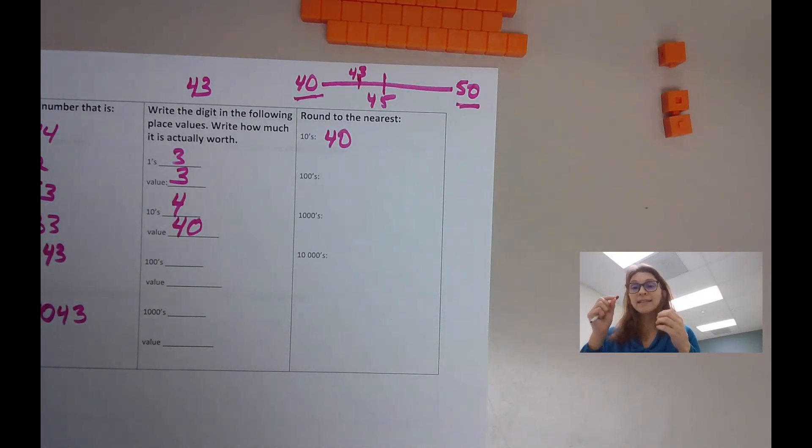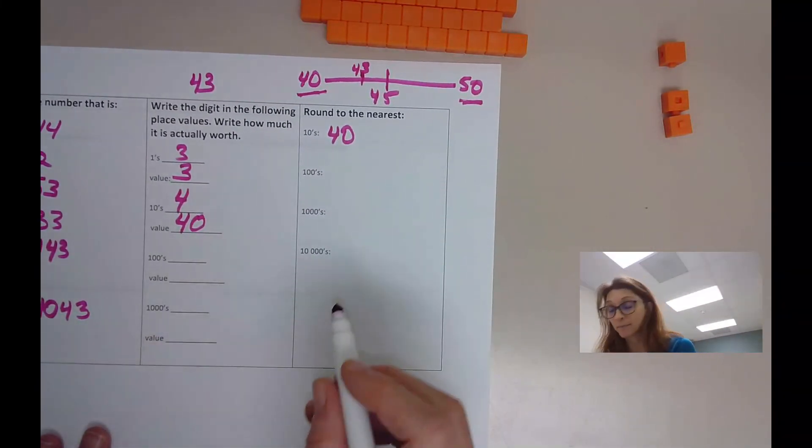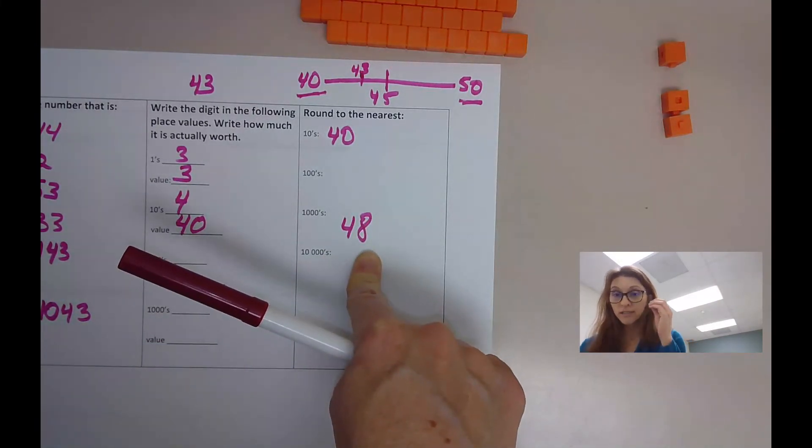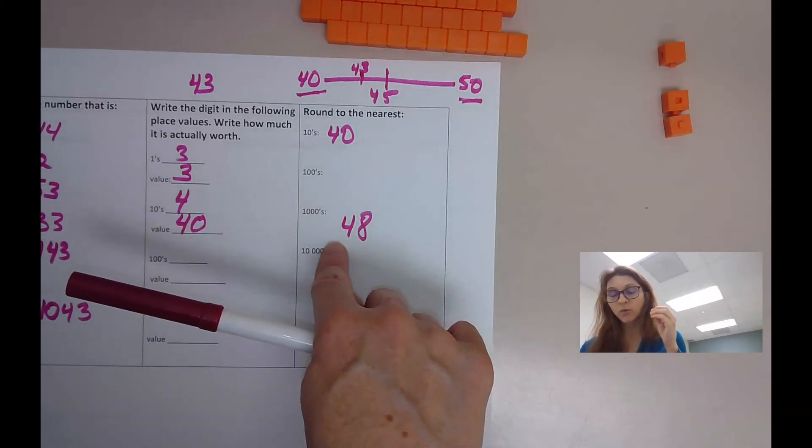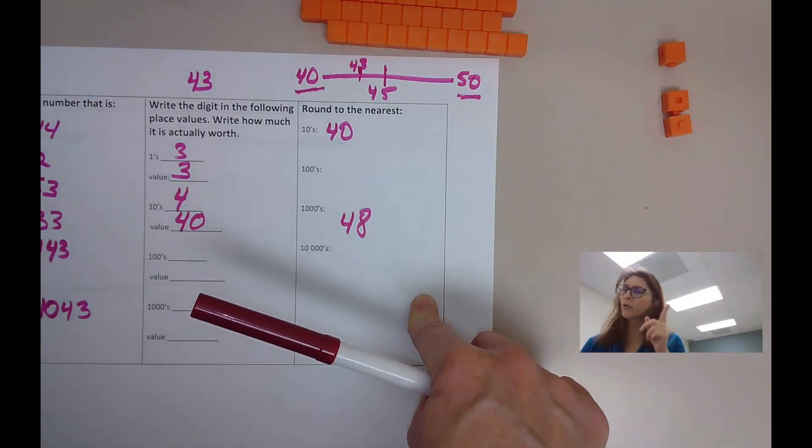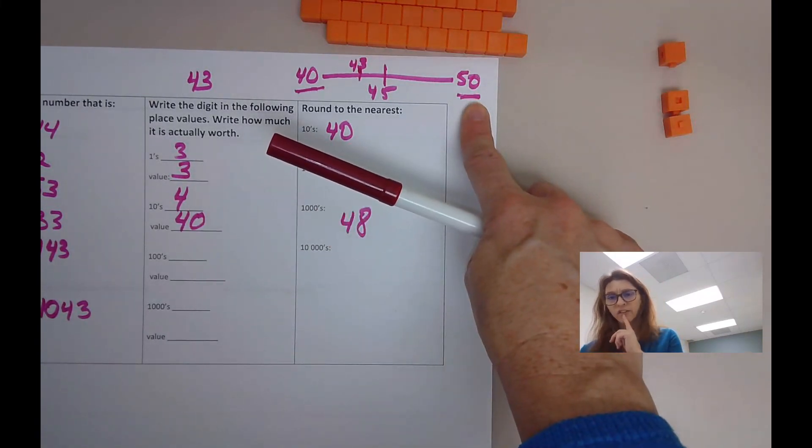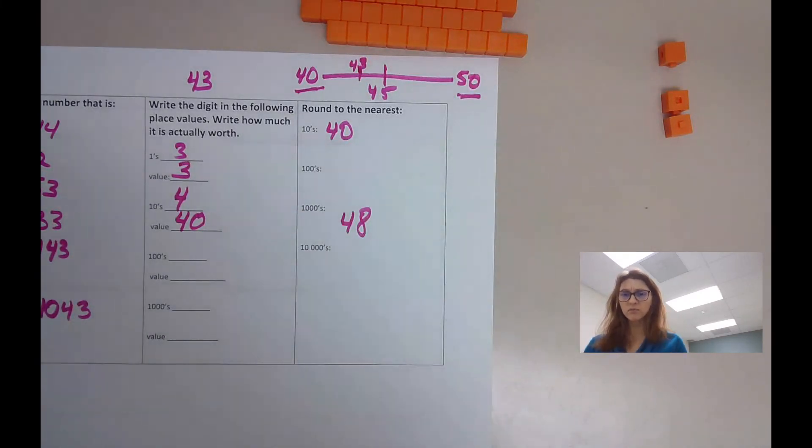If you have a digit, for example, this is just an example, 48. Just thinking logically, you can look at that number and go 48. Is that closer to 40 or to 50? Well, I know 45 is right in the middle. 48 is larger than 45, so it must be closer to 50, and it would round up to the number 50. Just keep that in mind. Use your benchmarks.